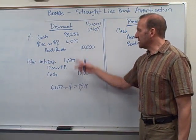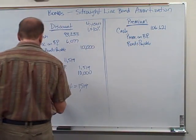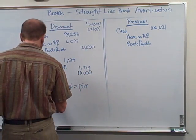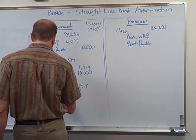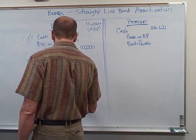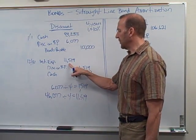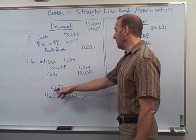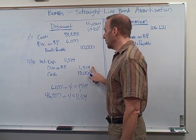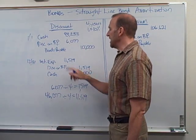Some people calculate a little differently. I like to just take the discount and divide it by four. You could have also done this: four years of interest — forty thousand dollars — plus the six thousand seventy seven, divided by four, gets you eleven thousand five hundred and nineteen. So you could calculate it that way also. I just like to do it based off the discount divided by four, and that's what's going to be credited here for my discount. I know what the cash is going to be, so then I'll have these two figures and I know what the interest expense will be.